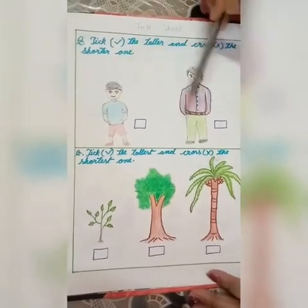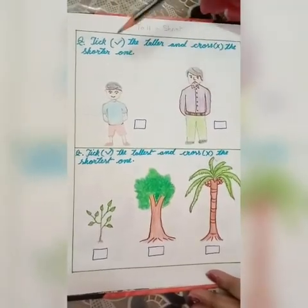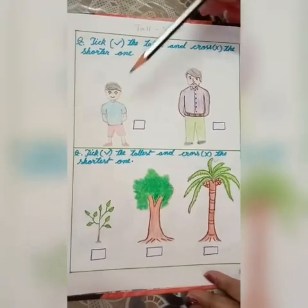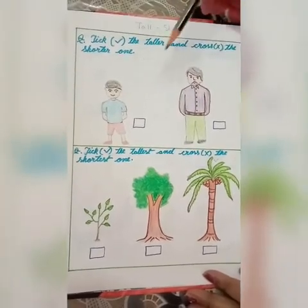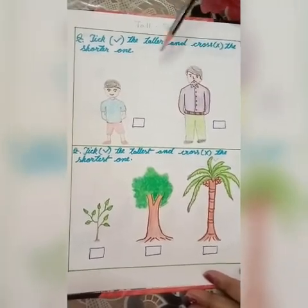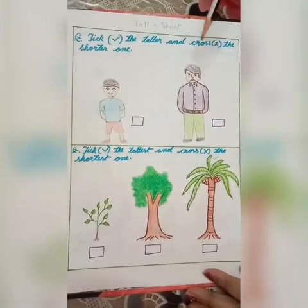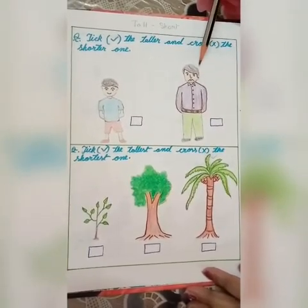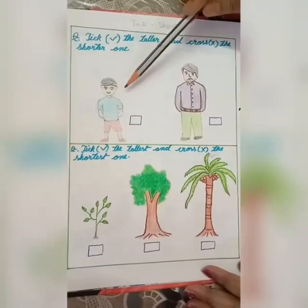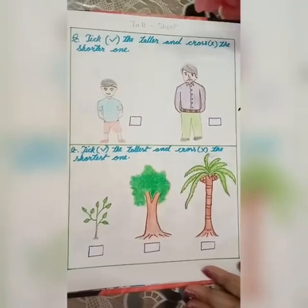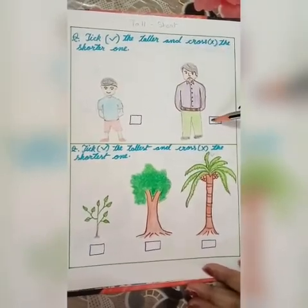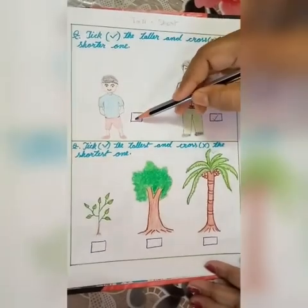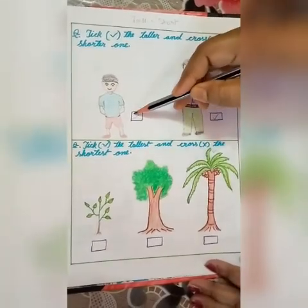Now look at this worksheet. There is one man and one boy. Who is taller? The man is taller and the boy is shorter. We have to tick the taller one and cross the shorter one.